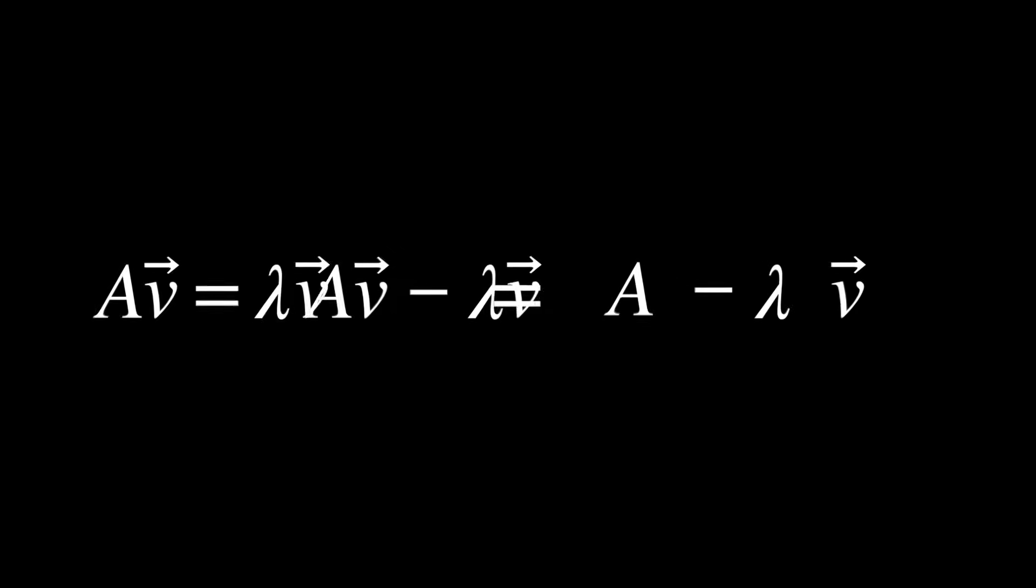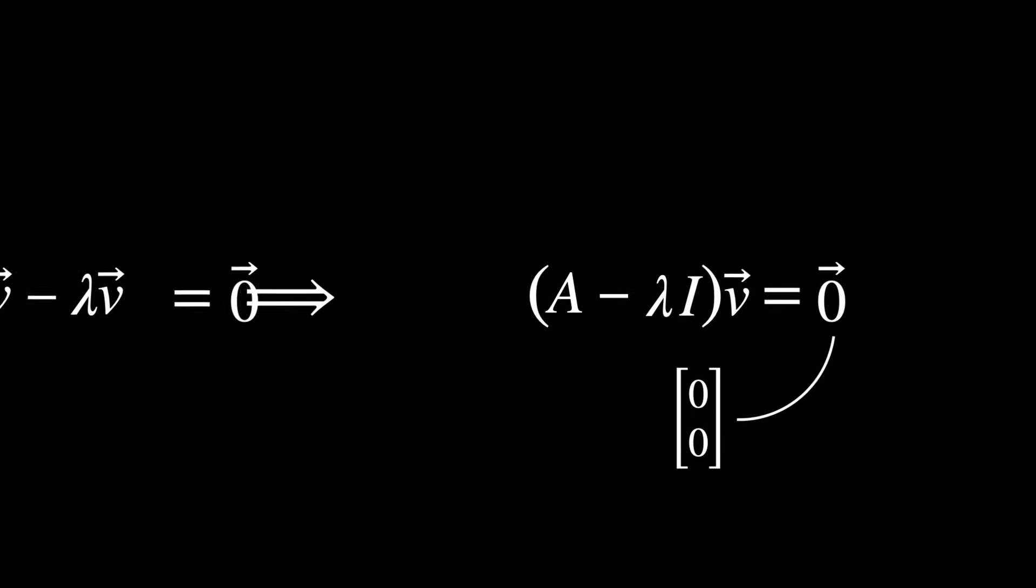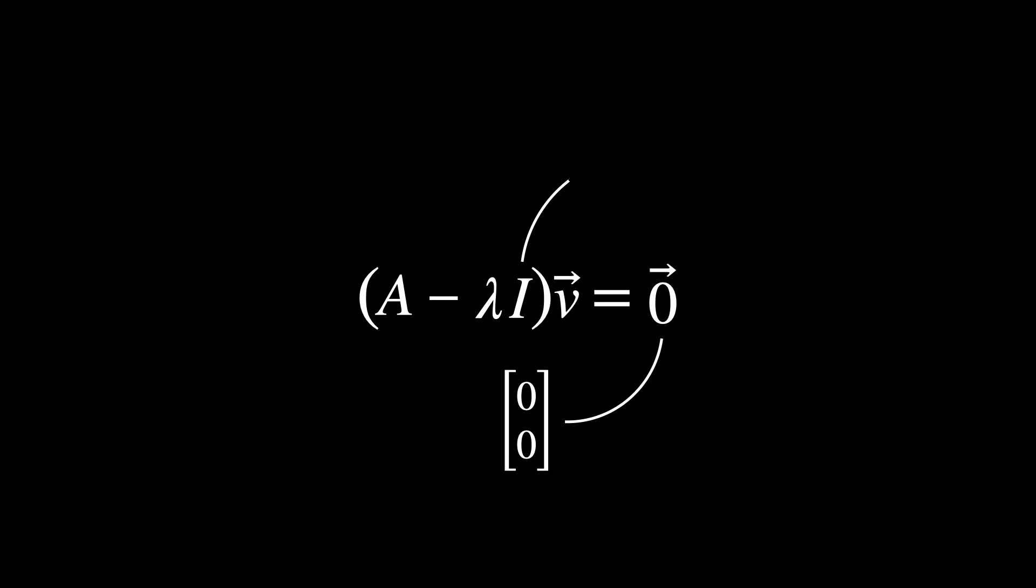We can write it as this. Now we introduce the identity matrix I in front of v, so acting on the vector v.